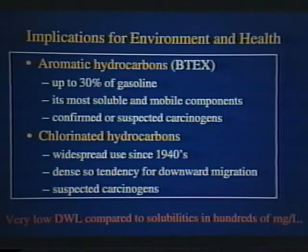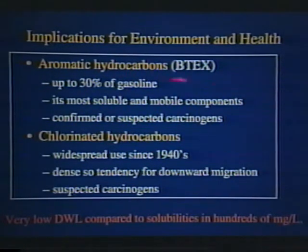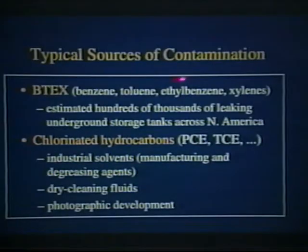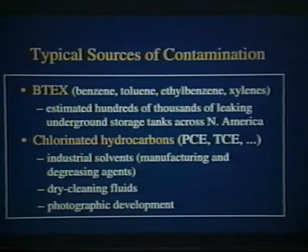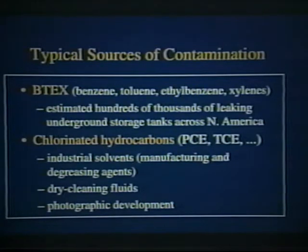The focus of today's lecture will be two particular groups of priority pollutants: the aromatic hydrocarbons, or BTEX group of compounds — benzene, toluene, ethylbenzene, and the xylenes — and the chlorinated hydrocarbons, such as PCE, TCE, etc. These contaminants are present in groundwater at very low concentrations, PPM to PPB level. At these low levels, it was simply not possible to routinely apply stable carbon isotope analysis using conventional techniques, so it was the recent development of compound-specific isotopic analysis that has allowed us, for the first time, to study these compounds at field concentrations.